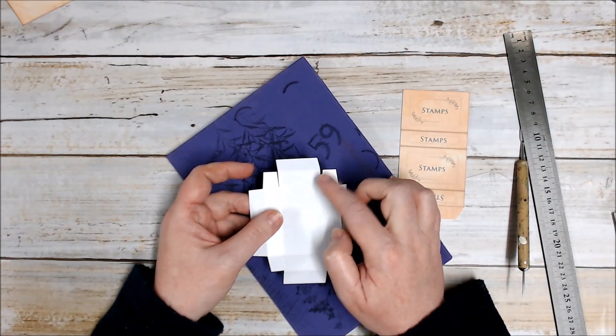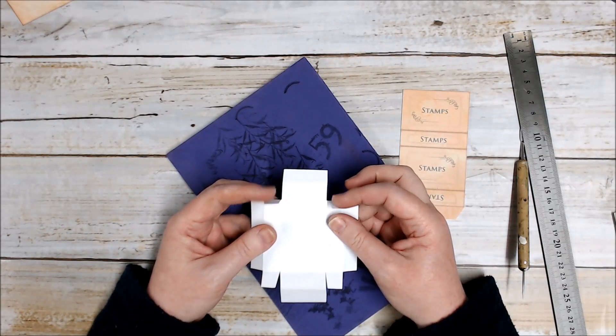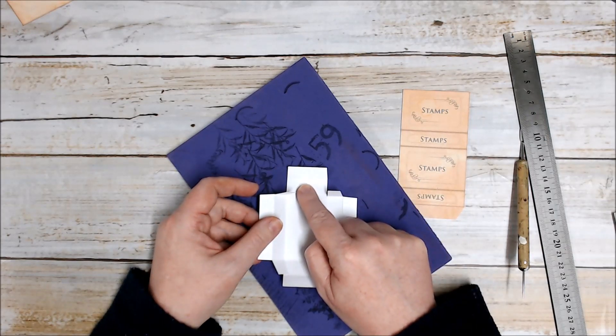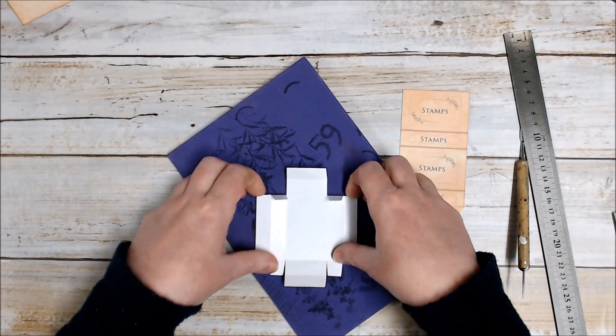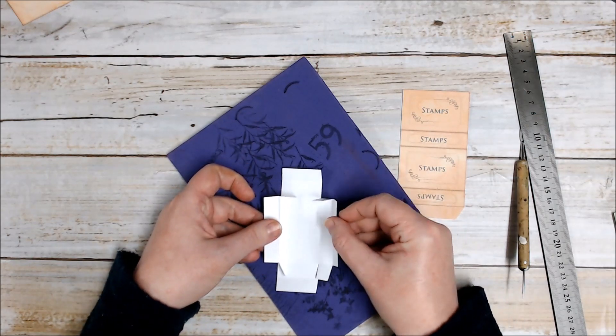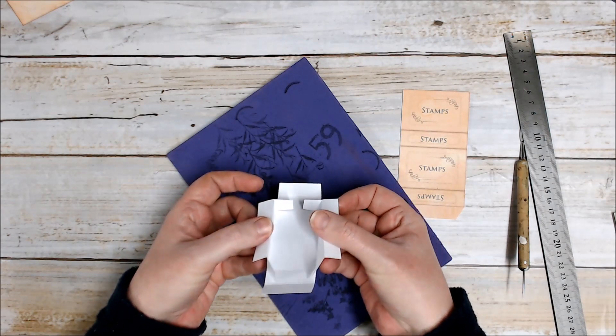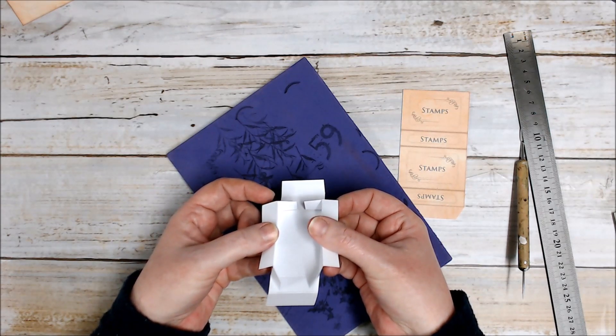We're going to work on the skinny end first. These two little flaps need to tuck inside this white flap here. I'm going to pull those down and then fold the sides up slightly. So my matchbox is starting to look more like a box.